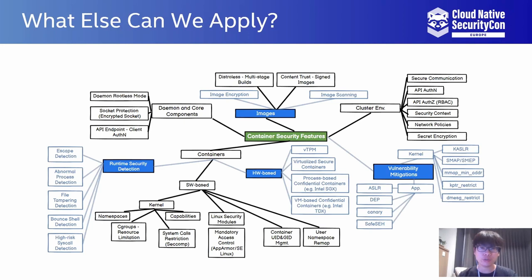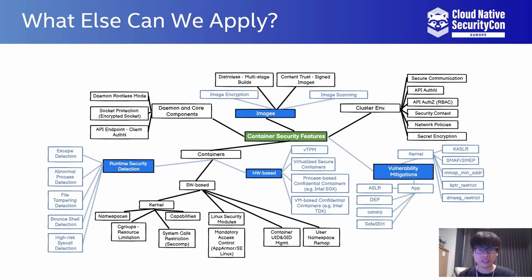In production, runtime security detection — which monitors and reports abnormal container behaviors such as high-risk syscalls and file tampering — is usually deployed. A series of vulnerability mitigations in kernel and applications can be utilized in parallel. Image scanning and encryption are two practical enhancements for images to help raise the security bar. Hardware-based container security techniques like virtualized secure containers are regarded as very helpful for defending against container escape. Looking forward, trusted execution environment-based confidential containers address privacy concerns, which we will discuss further later.